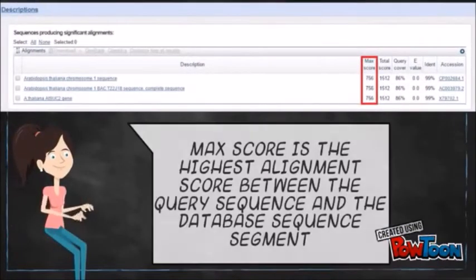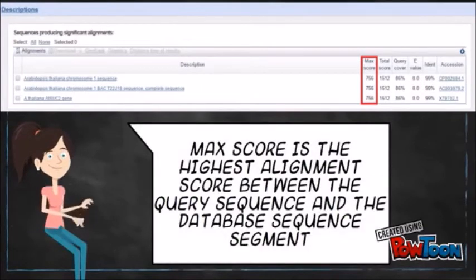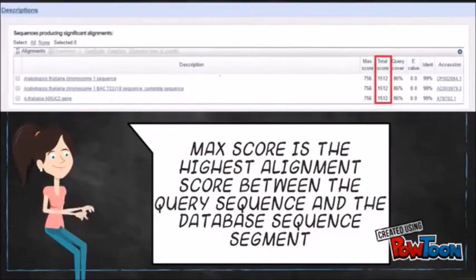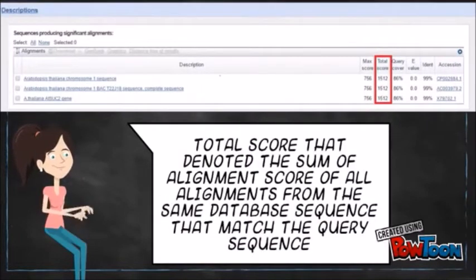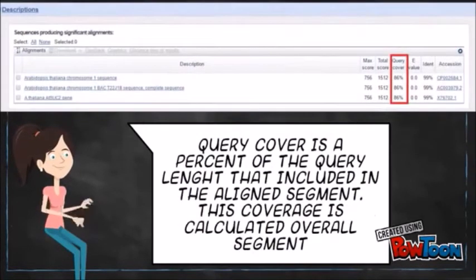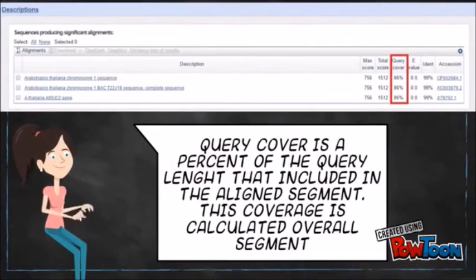Proceeding to the descriptions, Max score is the highest alignment score between the query sequence and the database sequence segment. Next to each column is the total score that denotes the sum of alignment scores of all segments from the same database sequence that match the query sequence. Query coverage is the percent of the query length that is included in the aligned segments. This coverage is calculated over all segments.